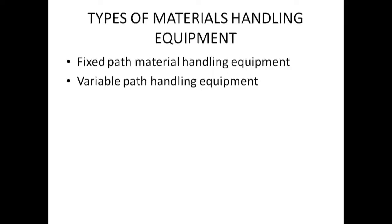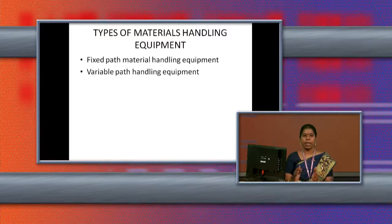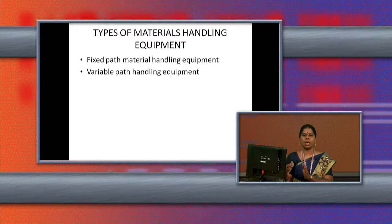There are two types of material handling equipment: fixed path material handling equipment and variable path material handling equipment. Fixed path material handling equipment means the materials are handled in a completely fixed path — the equipment cannot be moved to any other place. It stays in a permanent place, so materials are moved from one place to another along that fixed way.